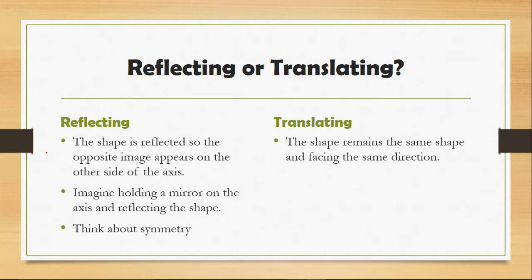But today we're looking at translating. So the shape, when translating, it remains the same shape and it faces the same direction, so the shape won't miraculously flip over and be a different side. You are drawing exactly the same shape, but just in a different position on the grid. When we're talking about translating, you may be given directions or coordinates that tell you how to move the shape around the grid.